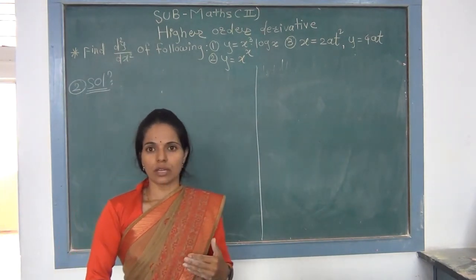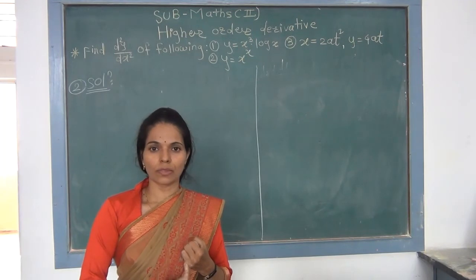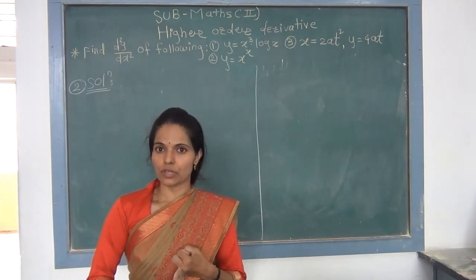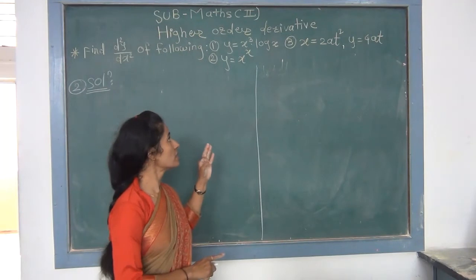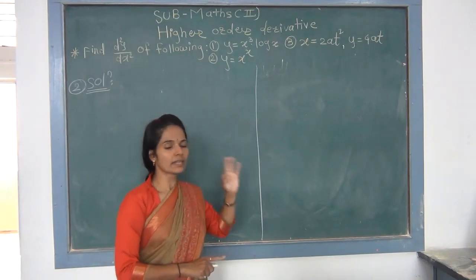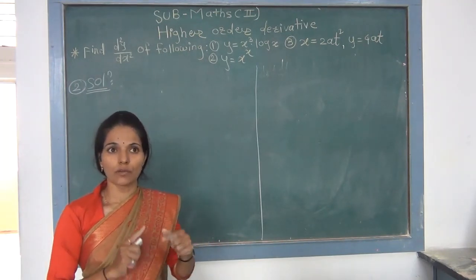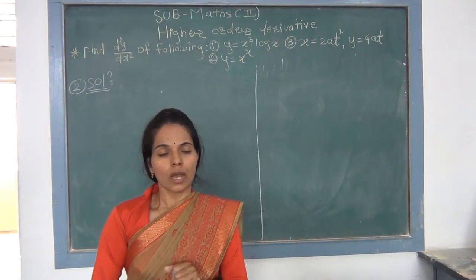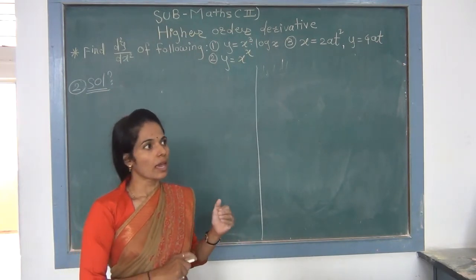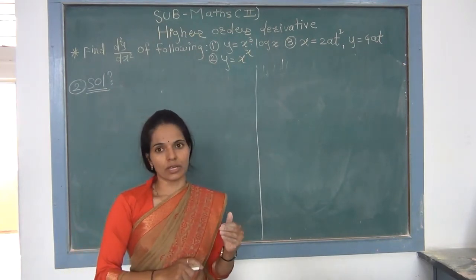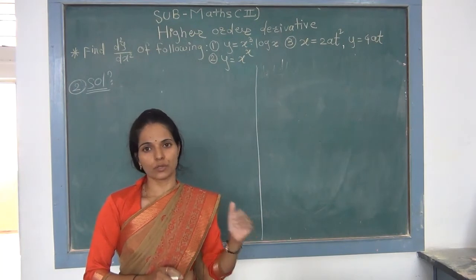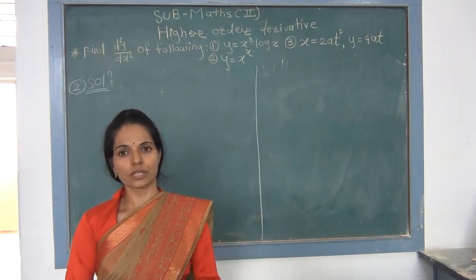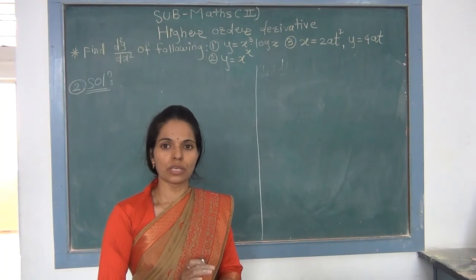Simplifying: x^x·(1/x) + (1 + log(x))·x^x·(1 + log(x)). Taking x^x common from both terms, we get d²y/dx² = x^x·[1/x + (1 + log(x))²]. This is the required second order derivative.